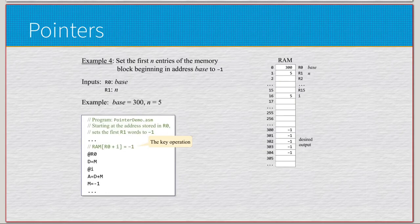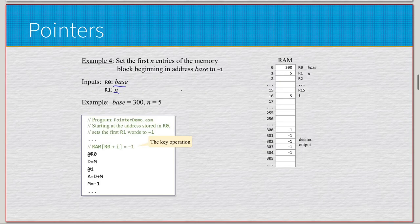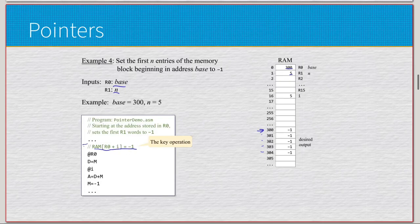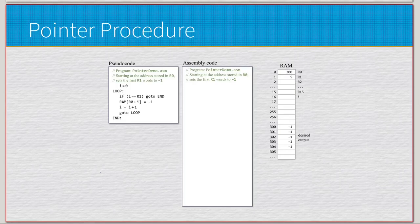Now I'll set up a problem: set the first N entries of the memory block beginning at address base to negative one. R0 is the actual base, R1 is the actual number of entries, and we just want to write negative one to those entries. Our base is 300, so we start at address 300, and we have 5 entries — addresses 300 through 304. The key operation is RAM[R0 + i] equals negative one. This will be a loop procedure that writes negative one to all of these based on parameters in R0 and R1.